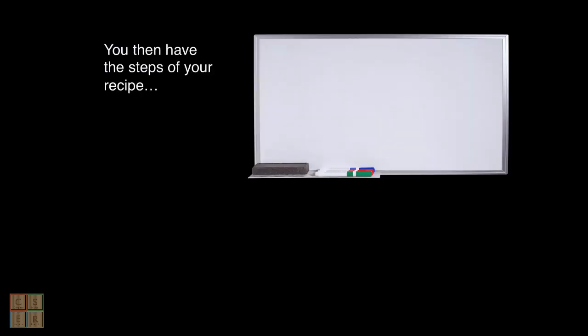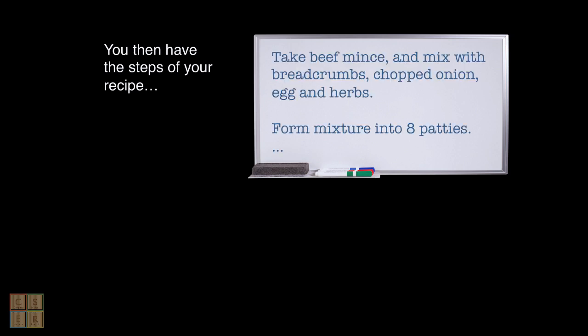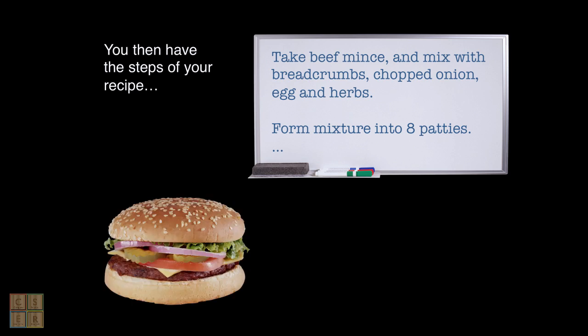Once you have all of your ingredients then you start your recipe or your algorithm following the steps of the recipe one by one and using your ingredients as they are needed in order to produce your final food or the outcome of your algorithm.